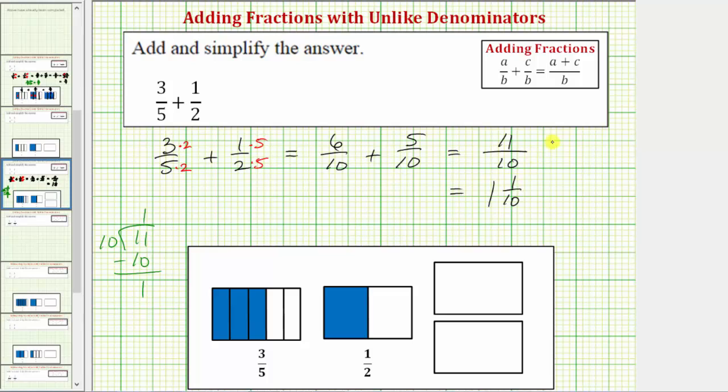Let's also show the sum using the model below. If we define the rectangle as one whole, here we have a model for three fifths. Here we have a model for one half. Before we can combine these two amounts, we want the parts or pieces to be the same size.